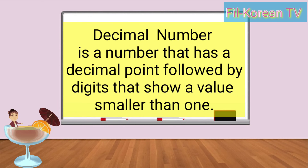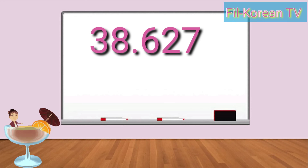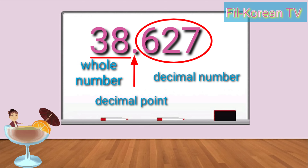A decimal number is a number that has a decimal point followed by digits that show a value smaller than 1, like 38 and 627 thousandths. The period is what we call the decimal point. The number to the right of the decimal point is the decimal number, and the number to the left of the decimal point is the whole number.